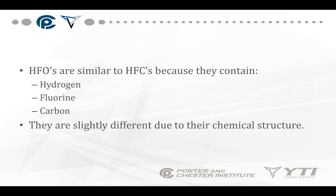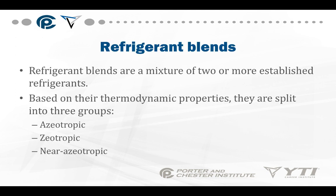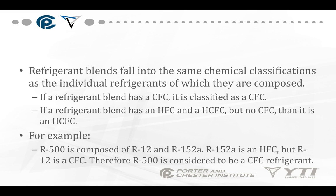HFOs are similar to HFCs because they contain hydrogen, fluorine, and carbon, but they're slightly different due to their chemical structure. Refrigerant blends are a mixture of two or more established refrigerants — they have to be done in a factory environment, not by the technician. Based on thermodynamic properties, blends are split into three groups: azeotropic, zeotropic, and near-azeotropic. Refrigerant blends fall into the same chemical classifications as the individual refrigerants they're composed of. We use the harshest classification for blends containing one or more different classifications.